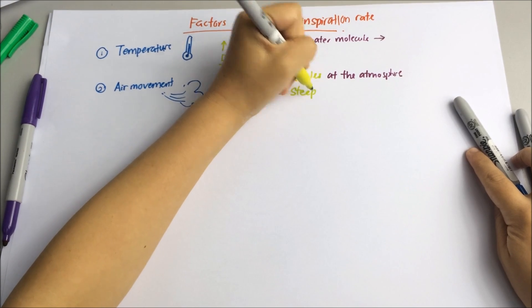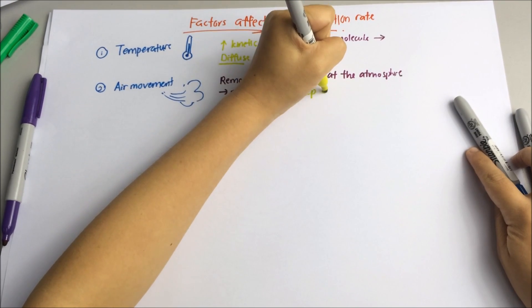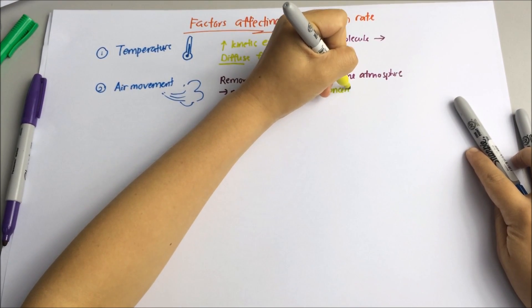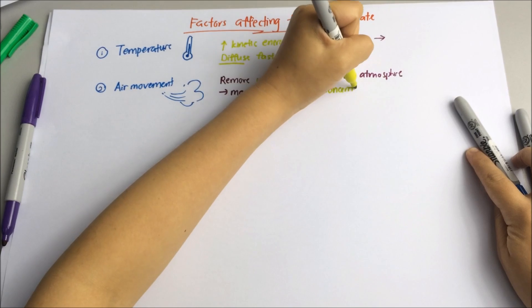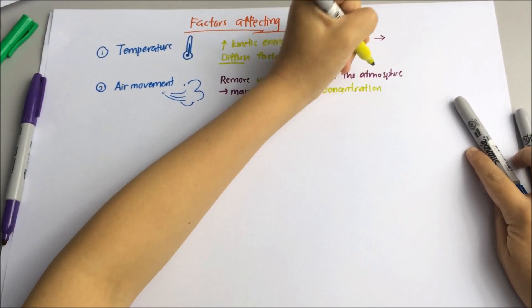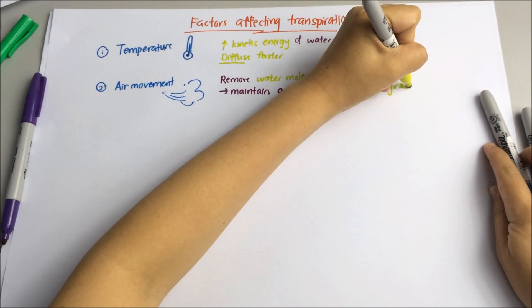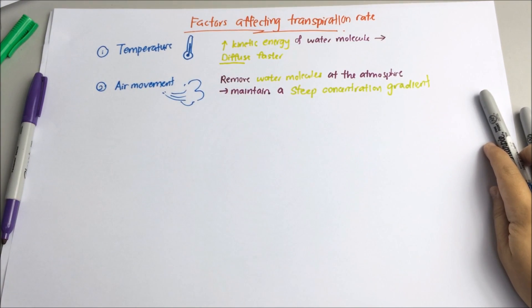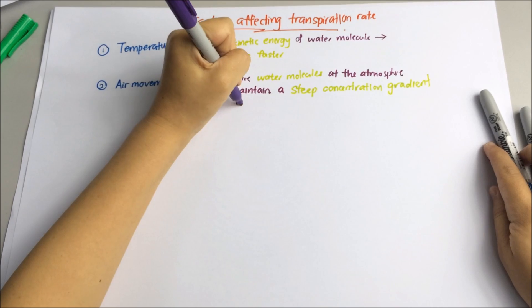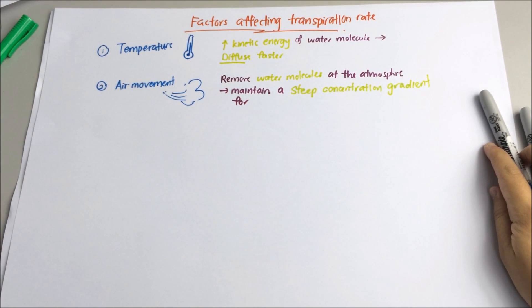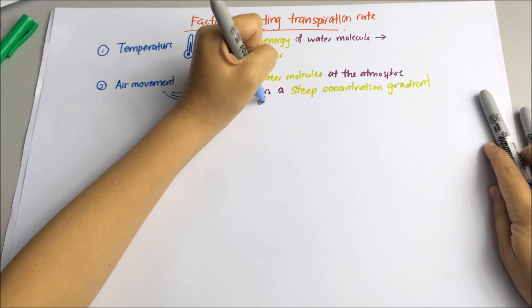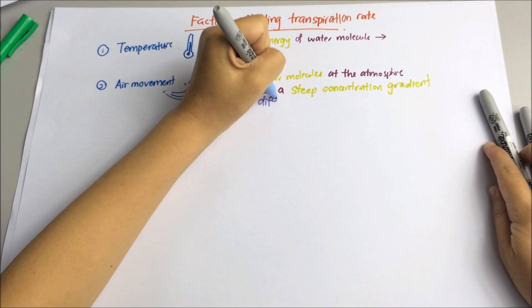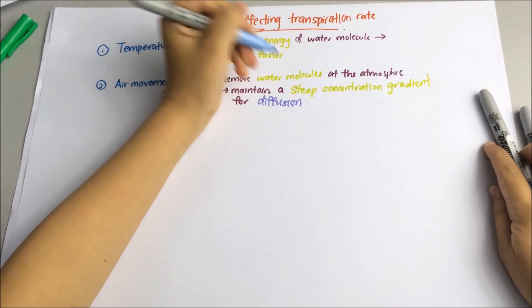The key word here is steep concentration gradient of water vapour, and this will subsequently increase the rate of diffusion. When the air is still, the transpiration rate decreases or stops altogether.